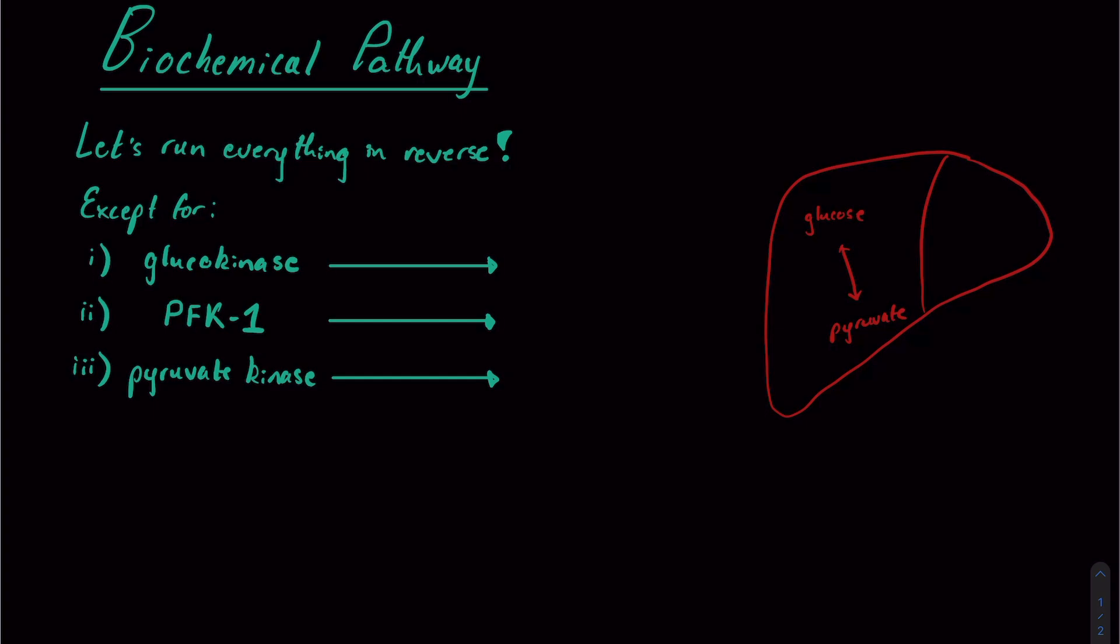And this is really high yield, because these are great one-off test questions that they could potentially ask you. So to circumvent glucokinase, if a kinase is adding on a phosphate, we want to remove a phosphate. And the enzyme named generally for that is a phosphatase. So we're going to use something called glucose-6-phosphatase.